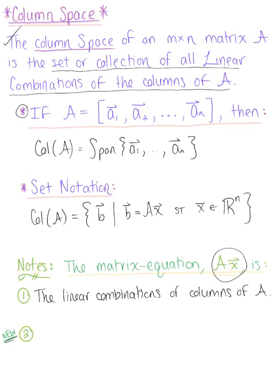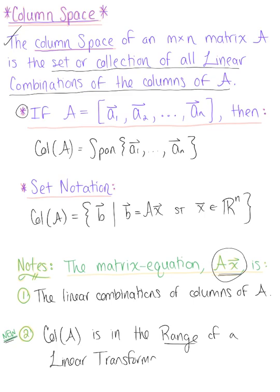The new one here that we want to keep in mind, that we're going to explore towards the end of this section, is that the matrix equation A times vector X is also the range of our linear transformations. So we can say that the column space of A is the range of a linear transformation. Something to get excited about.